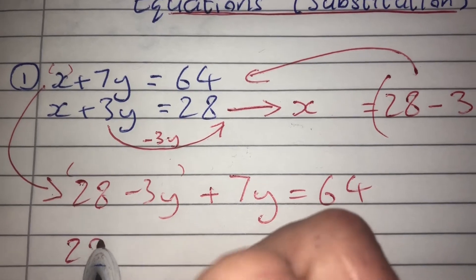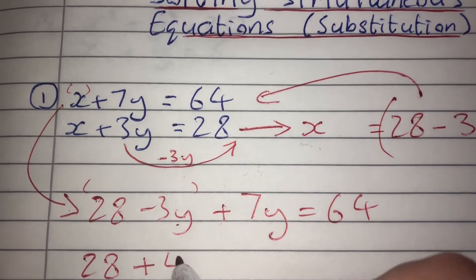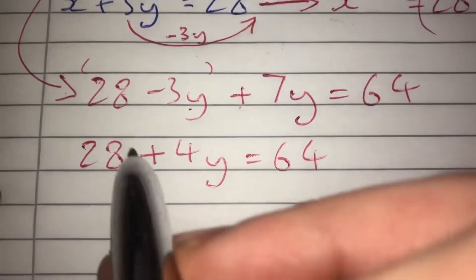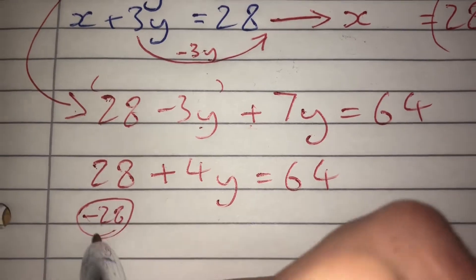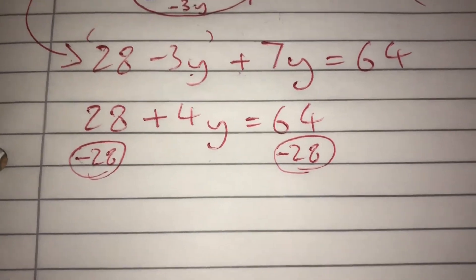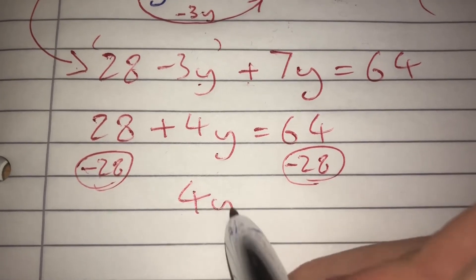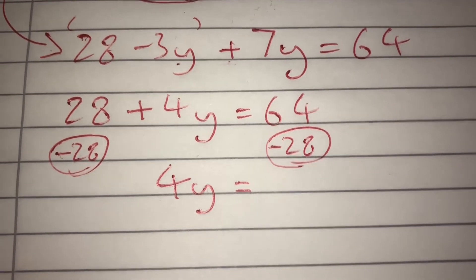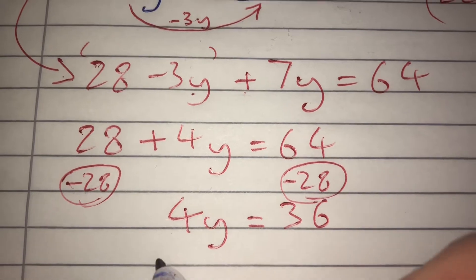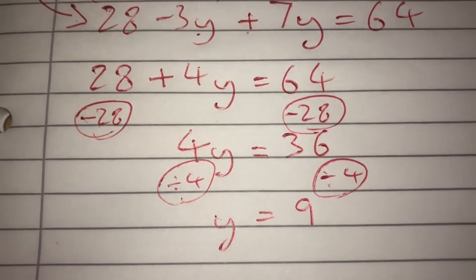Bringing the terms together: 28 minus 3y plus 7y — the y terms give positive 4y — equals 64. Now I subtract 28 from both sides to get rid of it. If you're unsure, there's a video on solving two-step equations. 28 take away 28 is 0, so it's gone, leaving 4y equals 64 minus 28, which is 36. Dividing by 4 gives y equals 9.